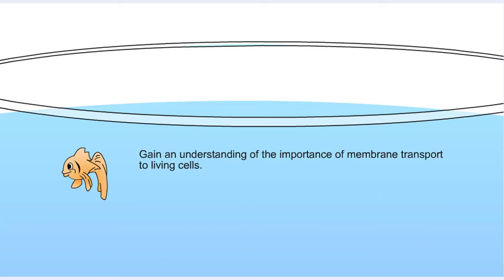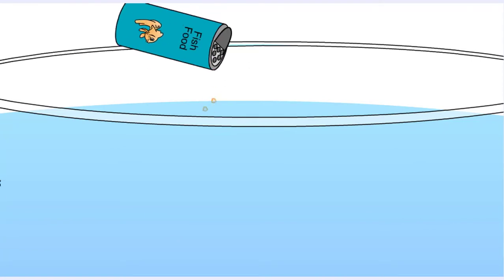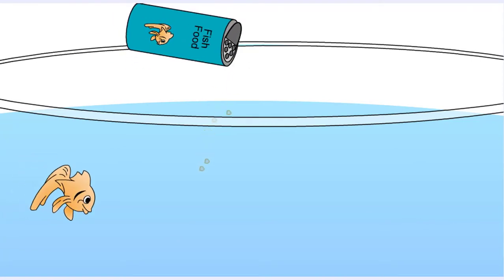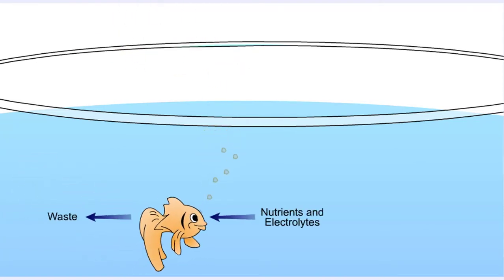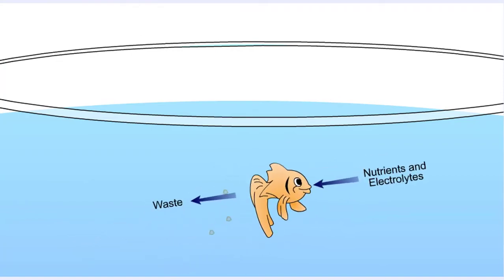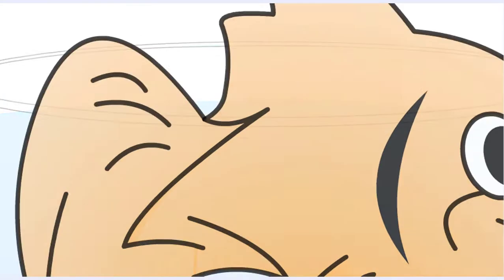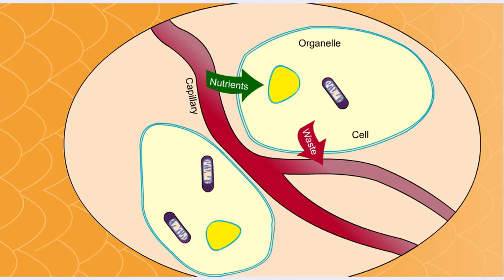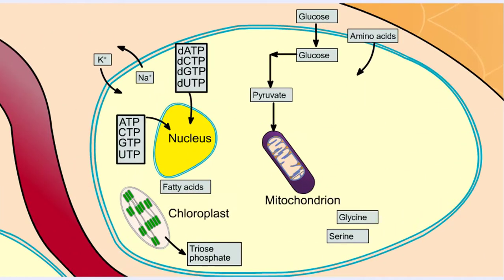Organisms are not isolated systems at equilibrium and need to intake nutrients and electrolytes as well as remove waste. Similarly, cells within an organism must also exchange compounds with their environment by passing them across their biological membranes. In eukaryotic cells, there is also transport across membrane-bound organelles such as the nucleus, endoplasmic reticulum, and mitochondria.